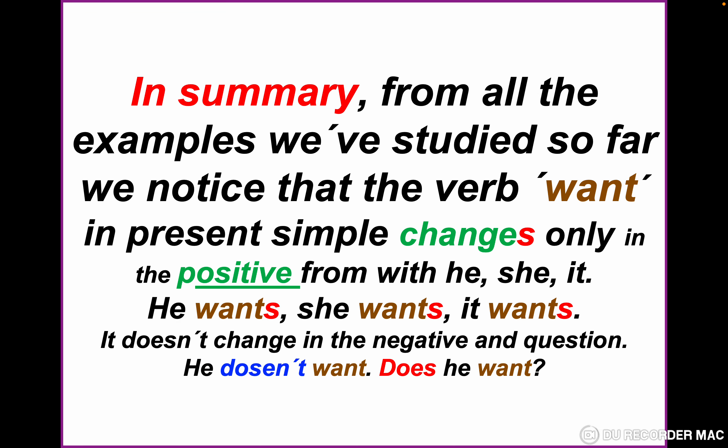In summary, from all the examples studied, we notice that the verb 'want' in present simple changes only in the positive form with he, she, and it — for example: he wants, she wants, it wants. It doesn't change in the negative and question form. For example: he doesn't want, does he want — the verb is without 's'. Note: 'doesn't' is spelled D-O-E-S-N-apostrophe-T.